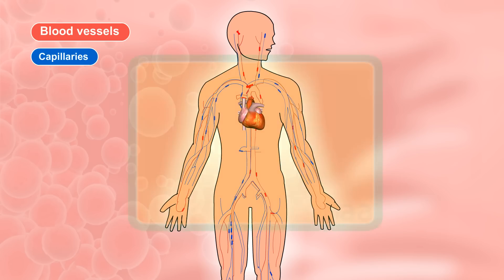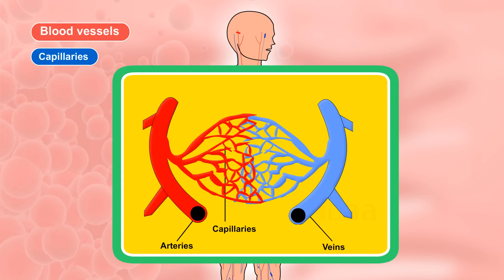Capillaries. Arteries divide into smaller vessels. These, on reaching the tissues, further divide into thin tubes called capillaries. Capillaries join together to form veins.